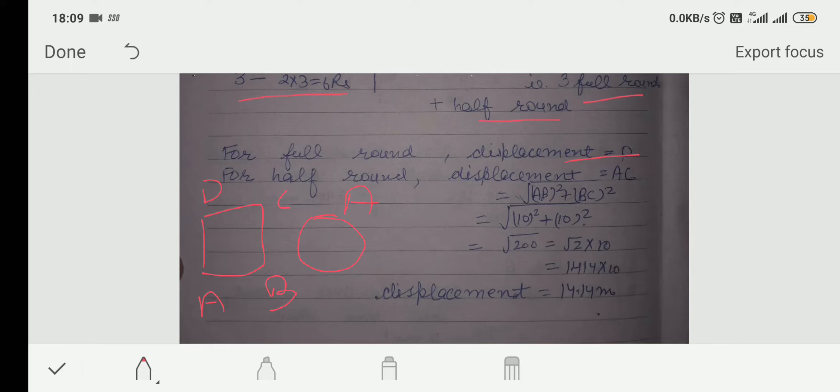But, for half round, then what will be the displacement? Then, it will be A, C. Because, if he starts his journey from here, half round means he comes to point C.